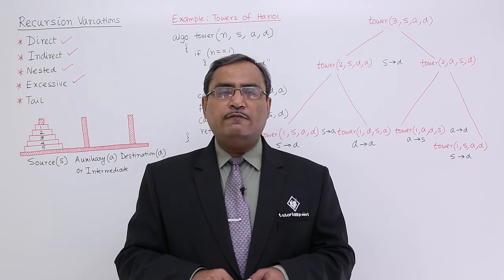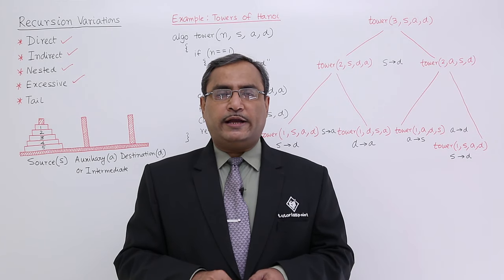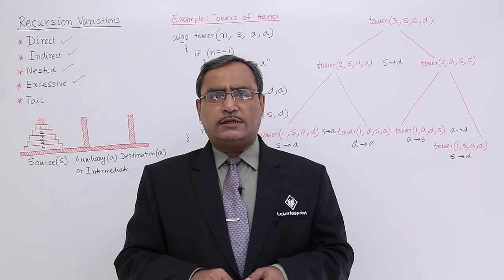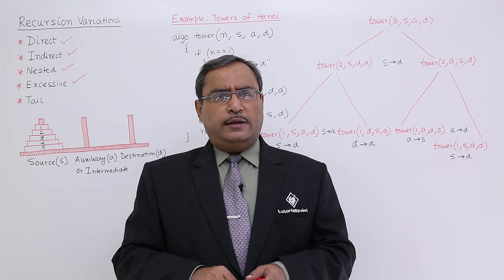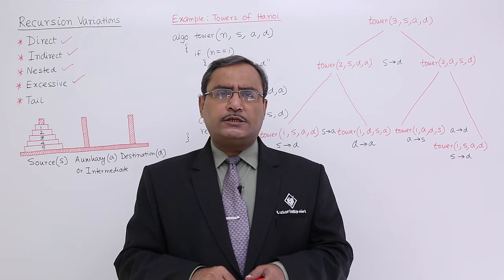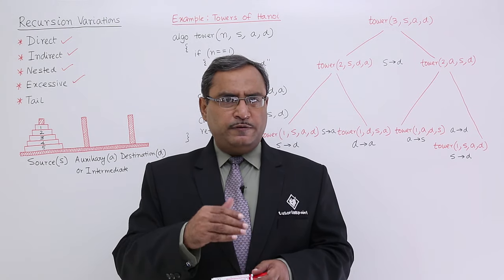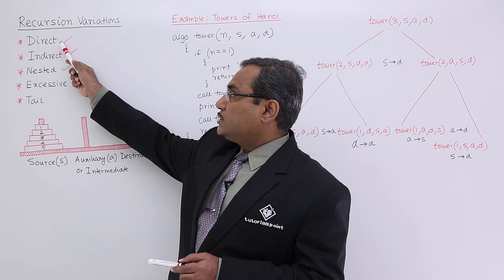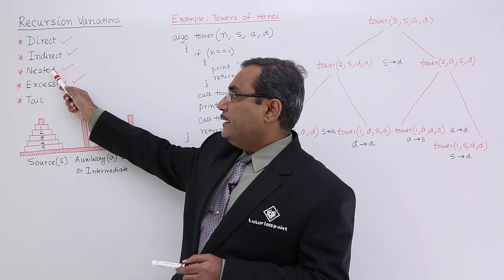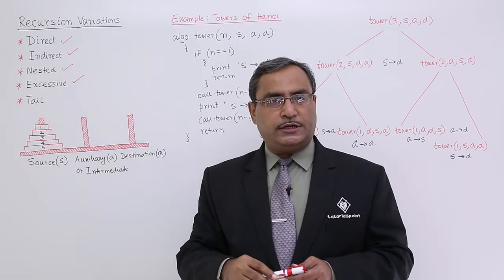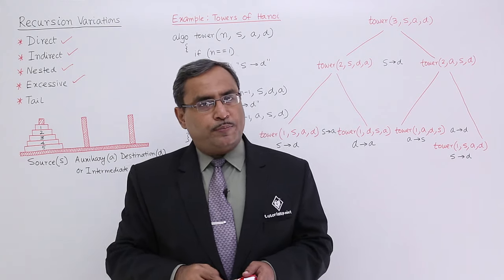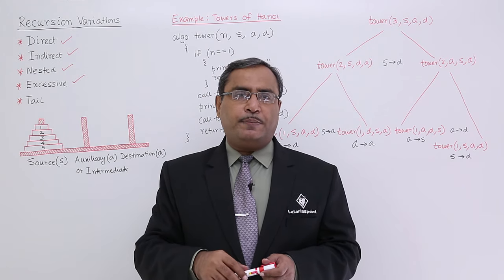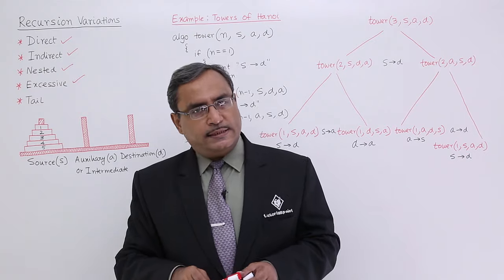We know that we have different variations of recursion: indirect recursion, direct recursion, nested recursion, excessive recursion, tail recursion, and so on. In our previous videos, we have already discussed direct recursion, indirect recursion, nested recursion, and excessive recursion with proper examples. In this session, we are discussing another example of excessive recursion.